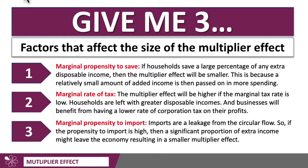The third factor is the propensity to import. Imports — goods and services that come in from overseas — are a leakage from the circular flow. So if the propensity to import is high, then a significant proportion of any extra income would leave our economy and our circular flow, resulting in a smaller multiplier effect. So the multiplier tends to be high when the propensity to save is low, the marginal tax rate is low, and the propensity to import is low as well.